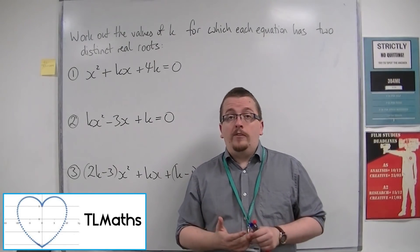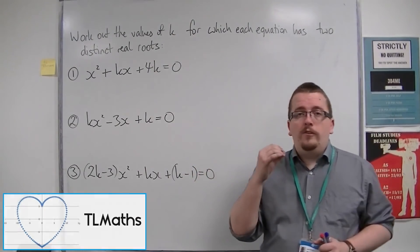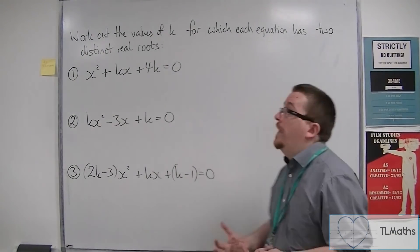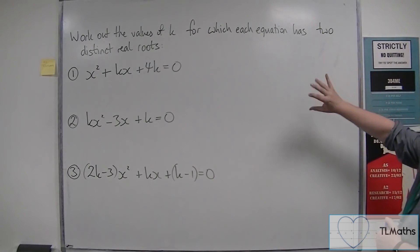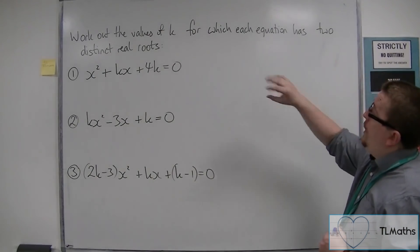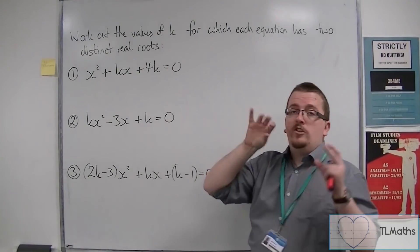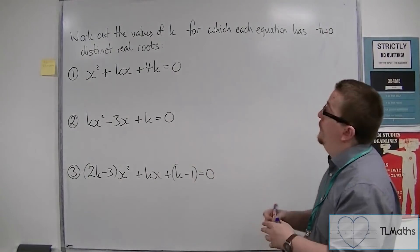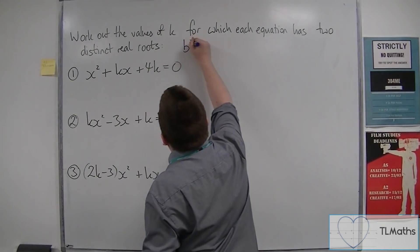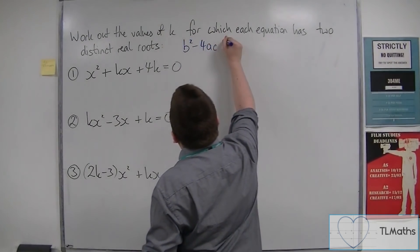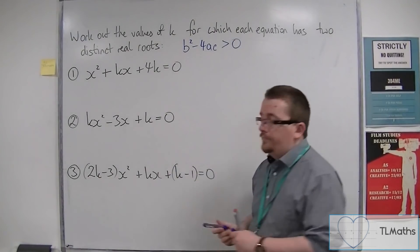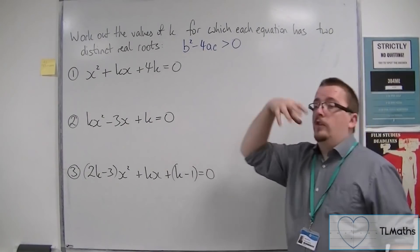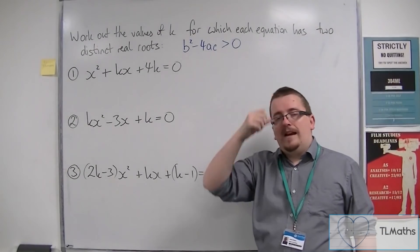So we've seen a basic example of how we can form a quadratic inequality using the discriminant. I'm going to go through three examples here of working out the values of k for which each of these equations has two distinct real roots. Now because we have two distinct real roots, that must mean that the discriminant is greater than zero. So this is the discriminant, this is the inequality that we're going to be substituting into and then solving.